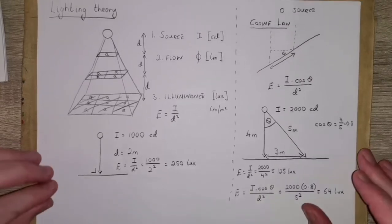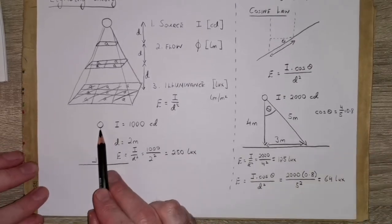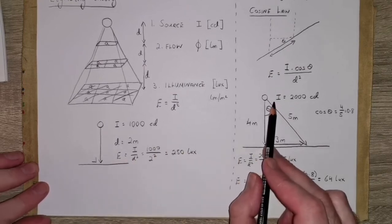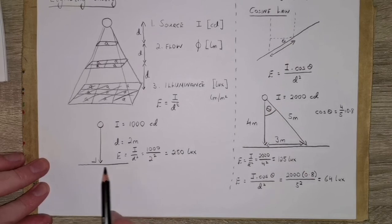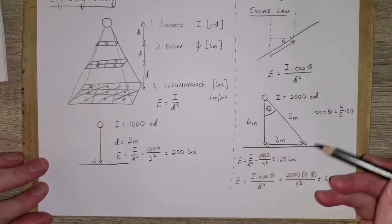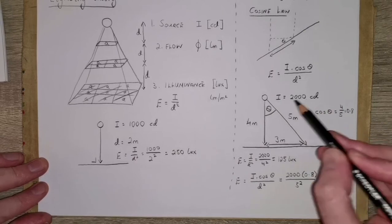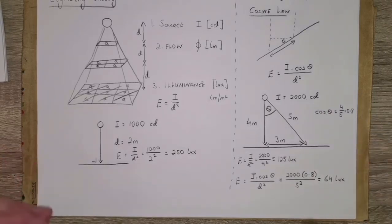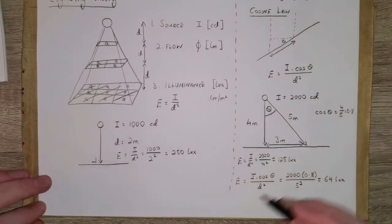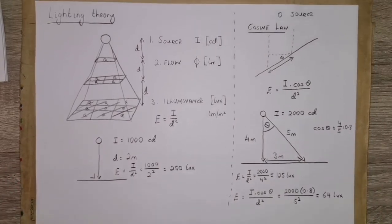That's the basic introduction to lighting theory for the moment. This thinking can be applied not only to single sources — such as a single source with a plane directly beneath at a right angle, or measuring illuminance at two different locations — but we can also apply this to having multiple sources of light. The contribution from each source can be added together based on the position we're measuring the illuminance at.